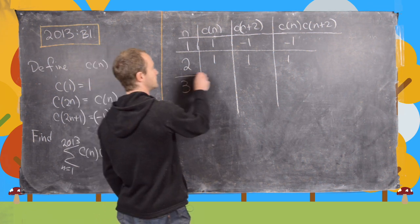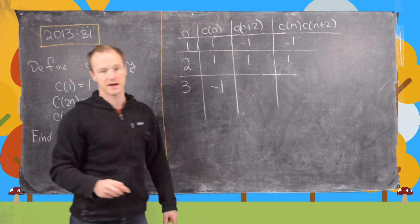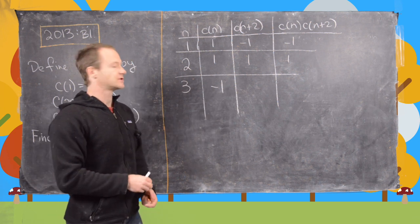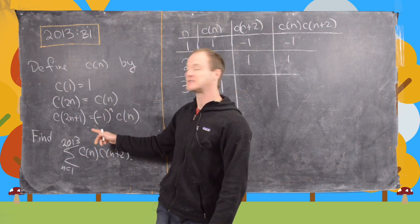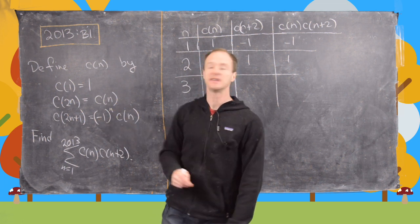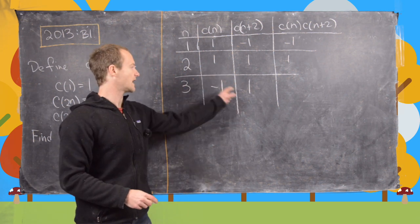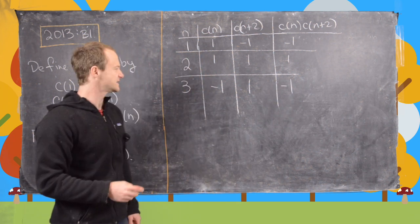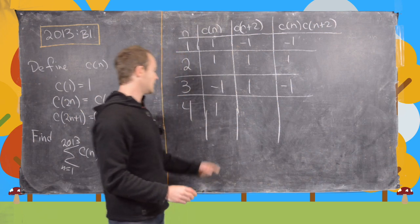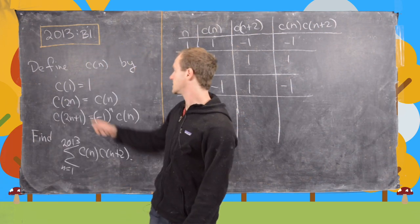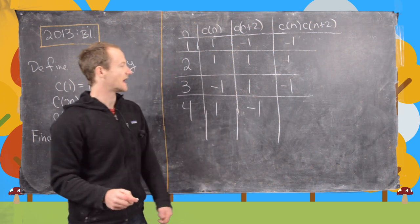Now let's go to 3. So notice we already know that c(3) is negative 1 from this part right here. And now we need c(5). So notice c(5) we can get from this equation right here with n equals 2. So that means c(5) will be (-1)^2 times c(2). But now notice c(2) was 1, so that means we get this. So negative 1 times 1, so that is negative 1. So let's do a couple more. Let's do 4. So we already know c(4) is 1. And then we need c(6), so that's going to be the same thing as c(3). So now notice c(3) is negative 1, so we get a negative 1 right there.